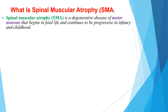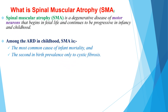Spinal Muscular Atrophy is a degenerative disease of motor neurons that begins in fetal life and continues to be progressive in infancy and childhood. Among autosomal recessive disorders in childhood, Spinal Muscular Atrophy is the most common cause of infant mortality and the second in birth prevalence, next to cystic fibrosis.